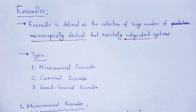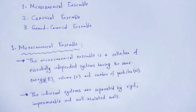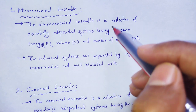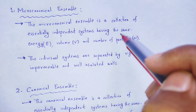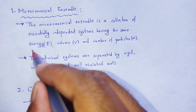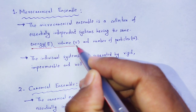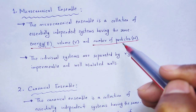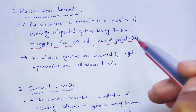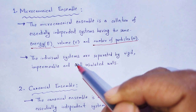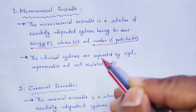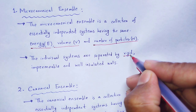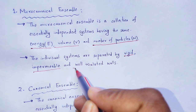First one: what is micro-canonical ensemble? Micro-canonical ensemble is the collection of essentially independent systems, that system having the same energy, volume and number of particles. These are the macroscopic properties — same energy, volume and number of particles. The individual systems are separated by a wall, and the nature of that wall is rigid, impermeable, and well insulated.